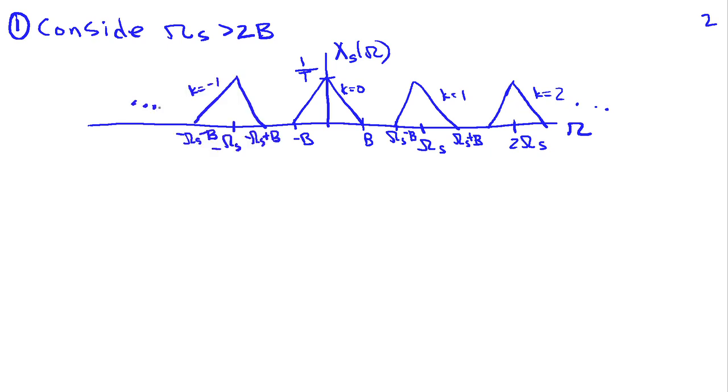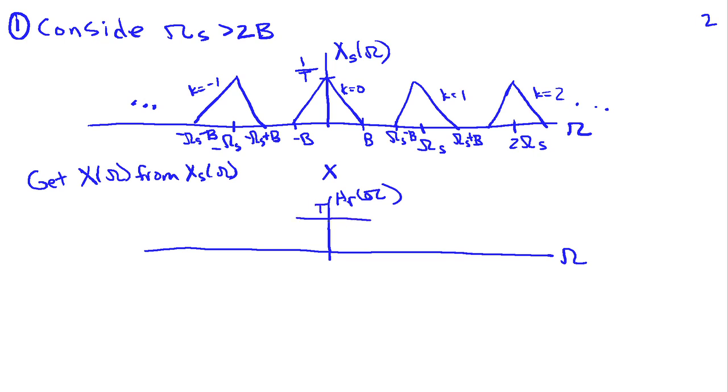Well, if we talk about the problem of reconstruction, which really amounts to getting x(t) back from x[n], that's equivalent to getting X(ω) from Xs(ω). So, if you look at this expression or this picture here for Xs(ω), is there a way that we can extract X(ω) from this picture? And the answer is yes, if I simply multiply Xs(ω) by Hr(ω), and we'll make that function to be T, because we have to account for the 1/T. So, we're going to make that T, and it's going to have a value of T to frequency ωs/2.